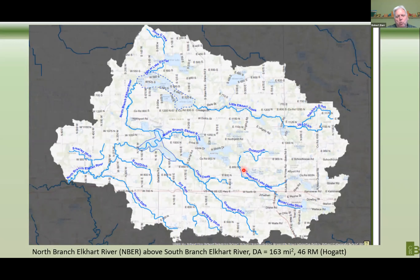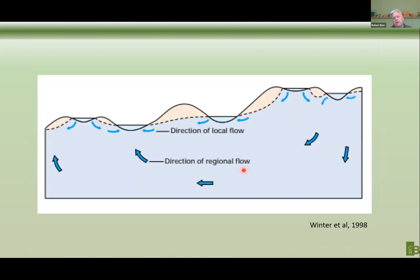One of the most important things we can do to start with is to understand how water is getting into the stream. In the case of North Branch, we very quickly learned that 80 to 85 percent of flow in the river and in the lakes was groundwater. That is fundamentally important to understanding what to do next.